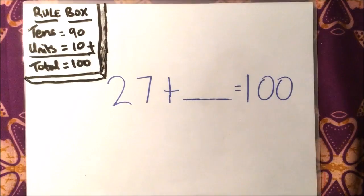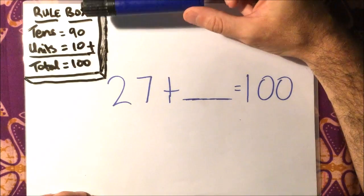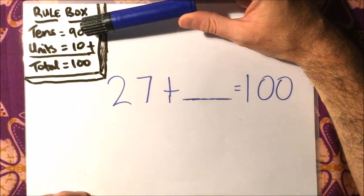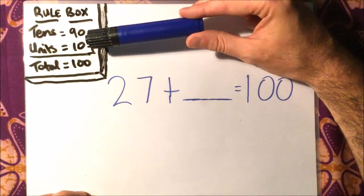Here we've got the rule box, so it says that we need to make the tens add up to 90. We need to make the units add up to 10, and then the 90 and the 10 will make the hundred.